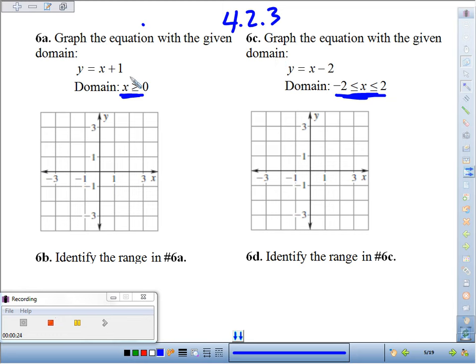It says graph y equals x plus 1 with a domain of x greater than or equal to 0. Whenever we're given a specific domain, we always want to make sure we use the endpoint. Here, 0 is the stopping point. It's the lowest value that we can select for x.